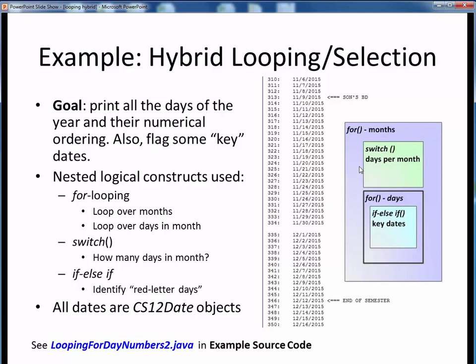However, the days per month differ for each month, so we need a way of determining the max value for each coupled nested inner loop. That's where a switch statement comes in — it performs an int switch on one of the 12 possible month numbers and returns the corresponding number of days in that month, which can be 30, 31, or in the case of February, 28 or 29 depending on whether it's a leap year. Also, as we traverse the inner for loops for the days of the month, we have some if-else-if selection logic to annotate a small handful of special dates. Please view the code walkthrough for loopingForDayNumbers.java, which you'll find in the usual place.